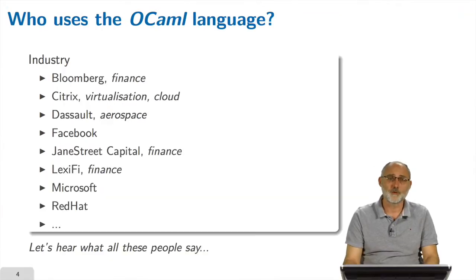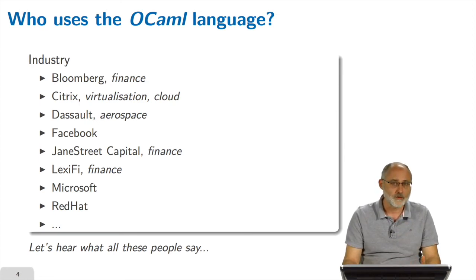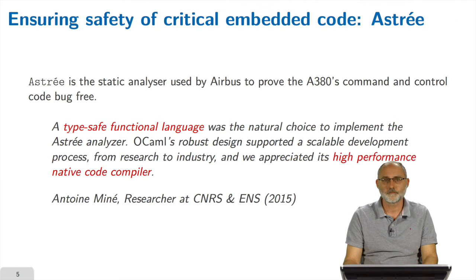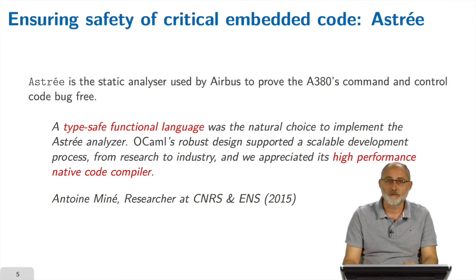So it's very interesting to hear what all these people say. We asked many of them to provide a quote for this course to explain why they chose the language. Let's start with Astrée, which is used to ensure safety of critical embedded code. Antoine Miné, one of the main contributors, told us the language was essential to develop a system as sophisticated as this analyzer because it's type safe, it's a functional language, it's robust, and has a high-performance native code compiler — which is important when you have to verify millions of lines of code written by others.